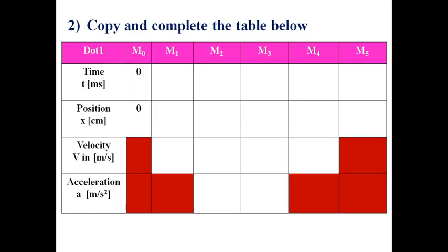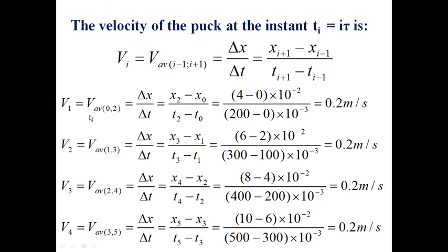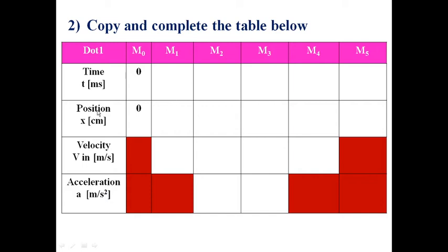Now velocity. To calculate the velocity at a given dot, we calculate the average velocity between the dot before and the dot after. Therefore, V1 equals X after minus X before over T after minus T before. And again, there is something you can add in the value, you can add a unit. For example, in the previous exercise that we did, the time was in milliseconds. We had 100, 200, 300. The position in centimeters: 2, 4, 6, 8.